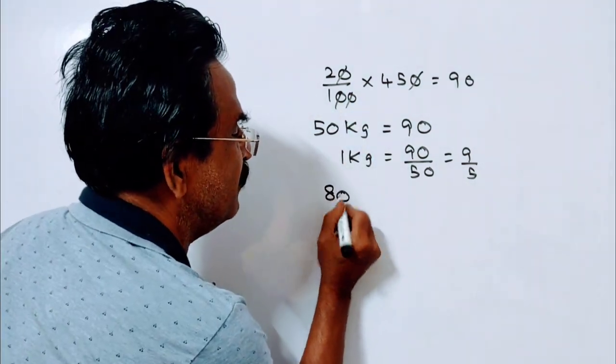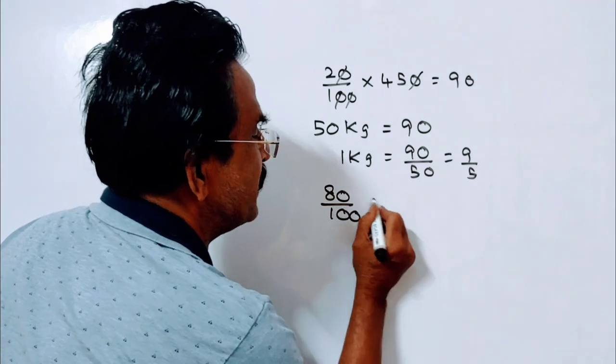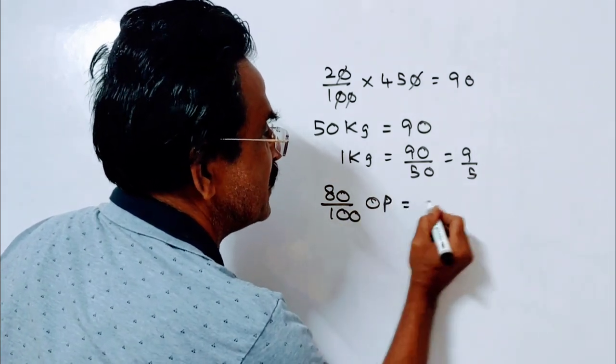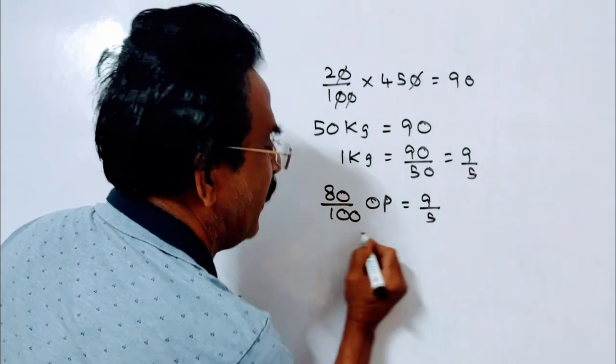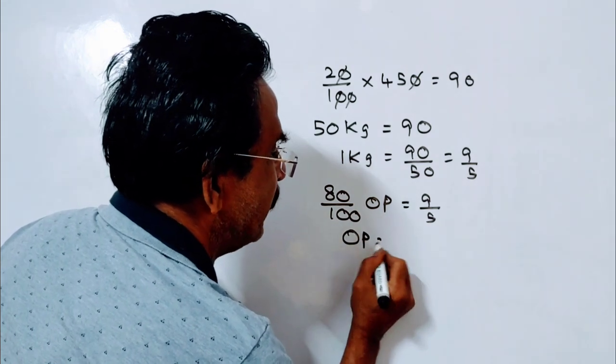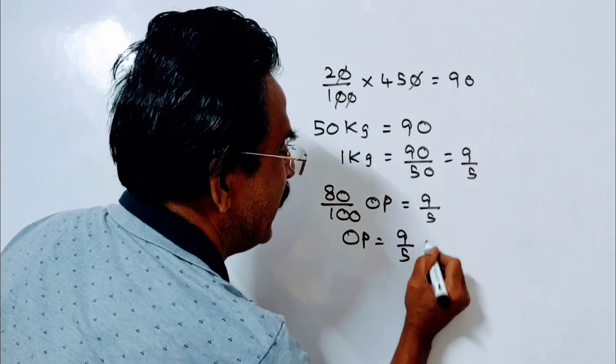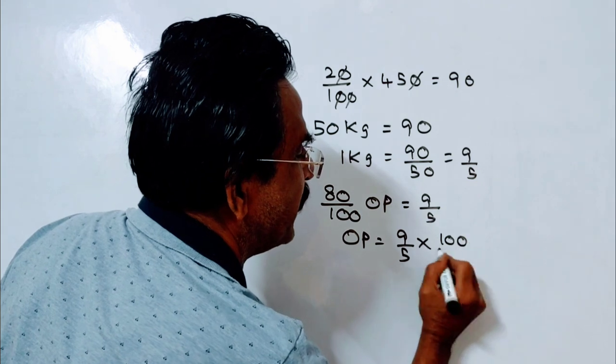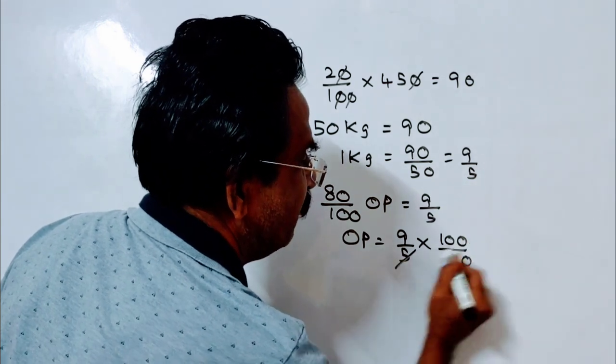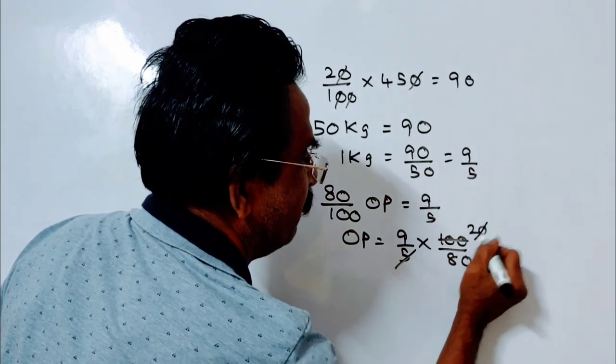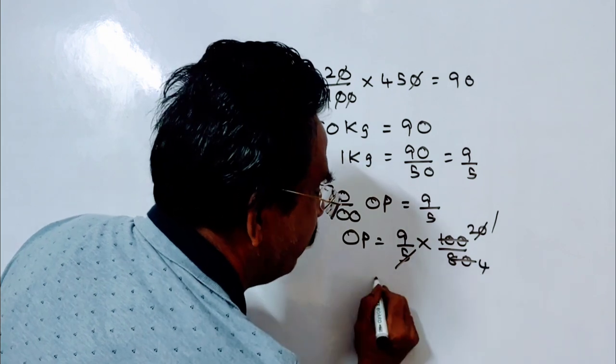So friends, 80% of the original price is equal to 9 by 5. So original price is equal to 9 by 5 into 100 by 80. Friends, 9 by 4.